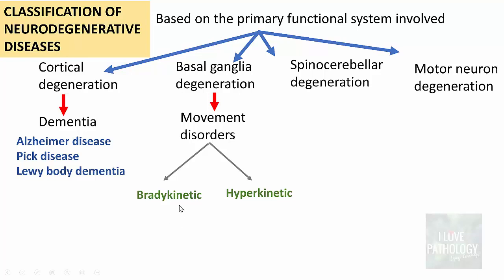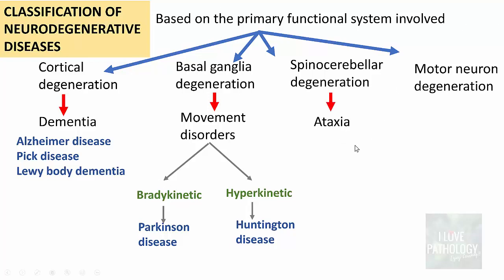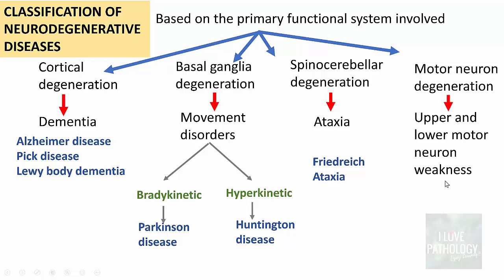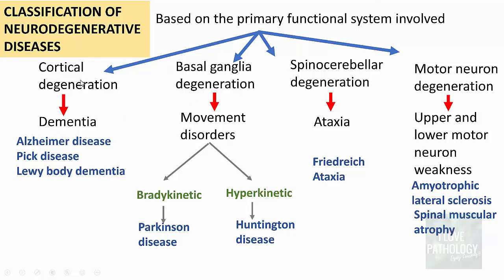Bradykinetic movement means the movement is very sluggish; the most common example is Parkinson disease. Hyperkinetic disorder involves abnormal hyperkinetic movements, the example being Huntington disease, which has choreoathetosis. Spinocerebellar degeneration manifests as ataxia, with Friedrich's ataxia as a common example. Motor neuron disease manifests as upper and lower motor neuron weakness, with examples being amyotrophic lateral sclerosis and spinal muscular atrophy.